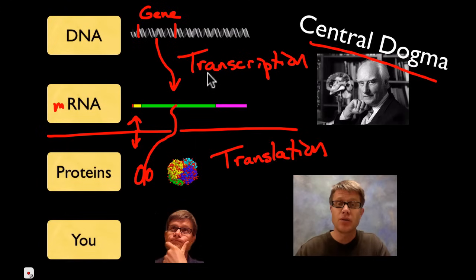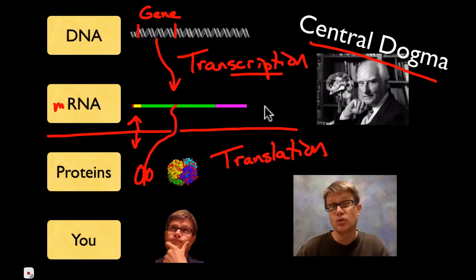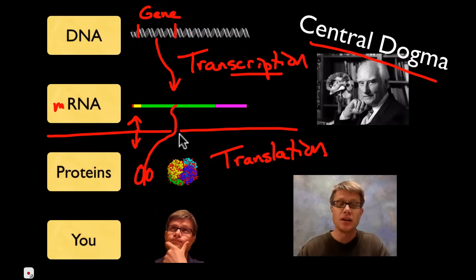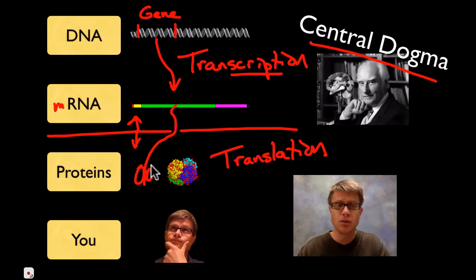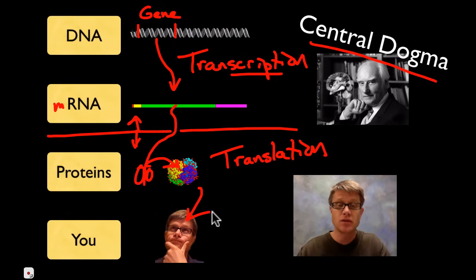So basically the way I remember it is that the script in transcription stands for to write. And so we're writing down the message of the gene into messenger RNA — so it's a message. And then that messenger RNA is going to go out here. And we're going to have a number of amino acids that weave together. And then we're eventually going to create a protein.